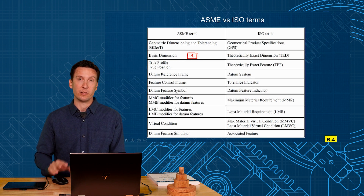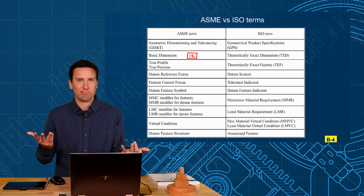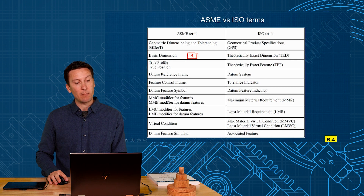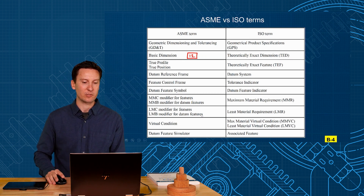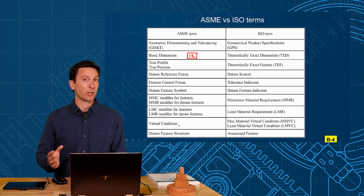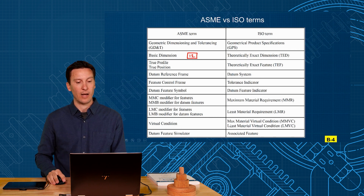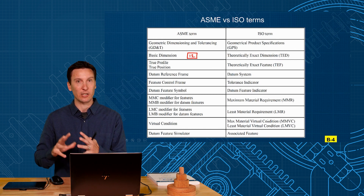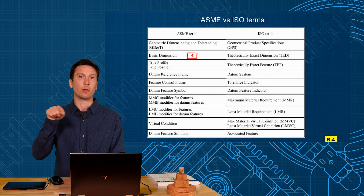Datum Feature Symbol is how you identify a certain feature as a Datum Feature, and ISO calls that a Datum Feature Indicator. MMC Modifier is what we call it in ASME standards, and ISO calls it MMR — the Maximum Material Requirement. So MMC versus MMR, and same thing: LMC versus LMR. We have the term Virtual Condition — that single worst-case boundary the feature cannot enter — and ISO calls that the Maximum Material Virtual Condition, or the Least Material Virtual Condition when you use the L modifier.